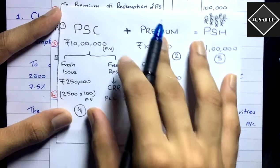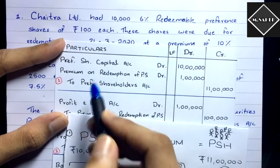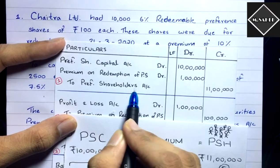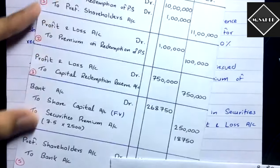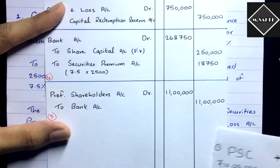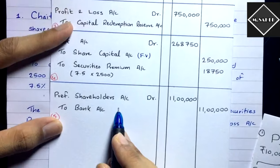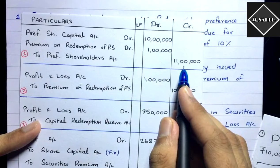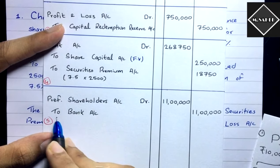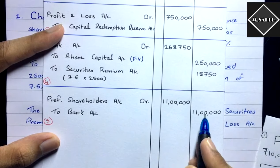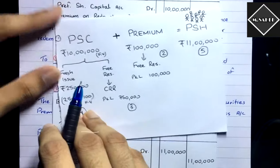The fifth and final entry is the payment to preference shareholders. In entry one, we created a liability by crediting Preference Shareholders A/c. Now we are paying them off, so: Preference Shareholders A/c Dr. ₹11 lakh; To Bank A/c ₹11 lakh. The liability is being extinguished so we debit the Preference Shareholders account, and Bank is decreasing (an asset decreasing) so we credit Bank.